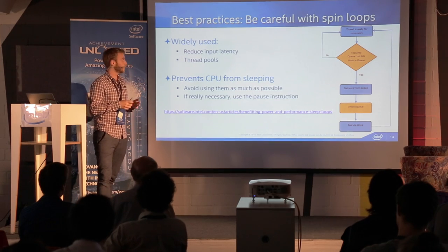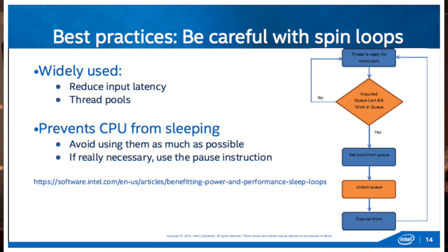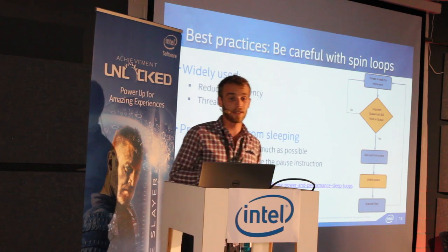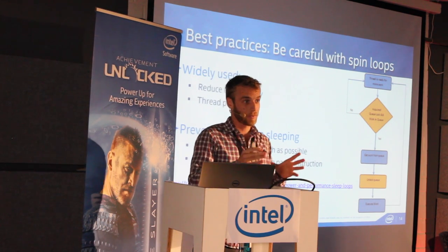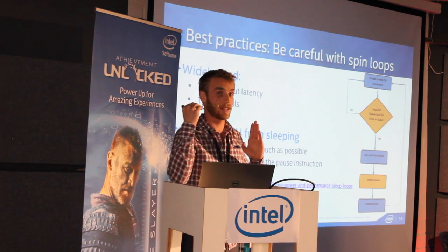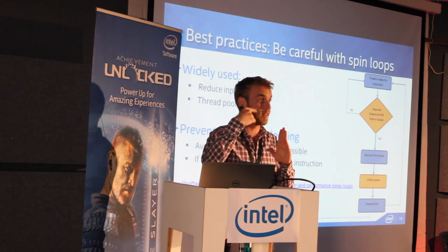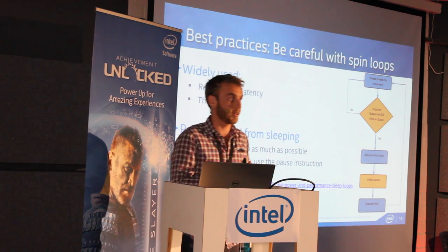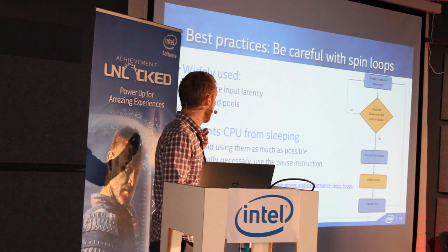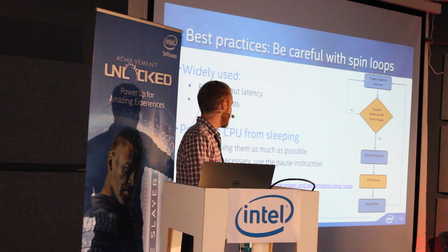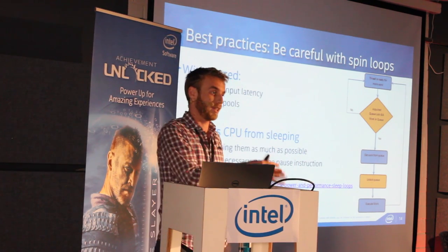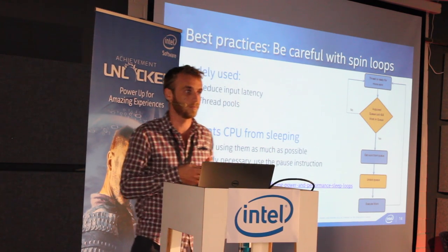Be careful of spin loops. We've all used them — they're everywhere, used to reduce input latency, in thread pools, etc. But they are really bad for power because instead of sending your CPU to sleep, they keep it awake without computing anything, just preventing it from saving power. Most of the time now there are ways to avoid them — you can use interrupts. If you really need spin loops, use the pause instruction, which hints to the CPU that it's okay to go to sleep during the spin loop and save power.